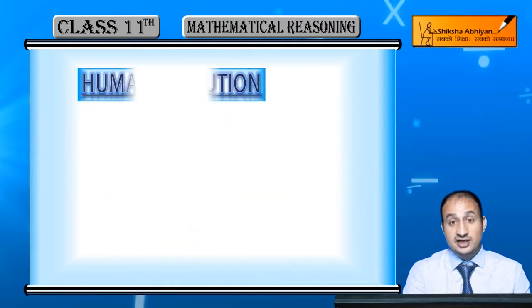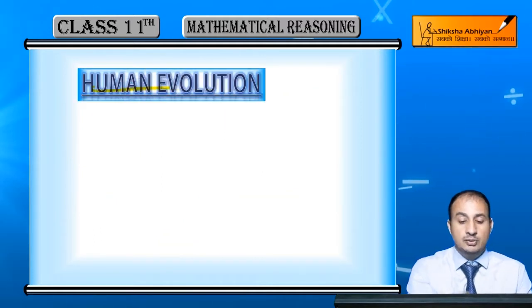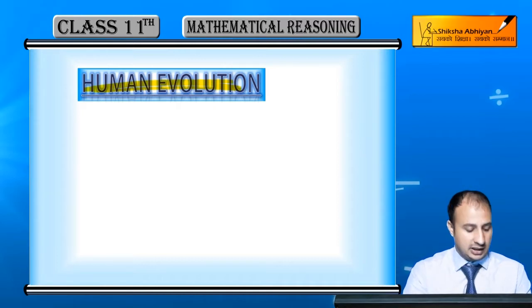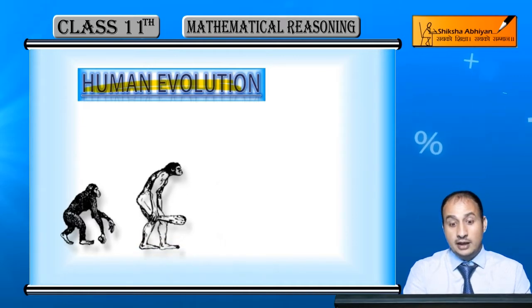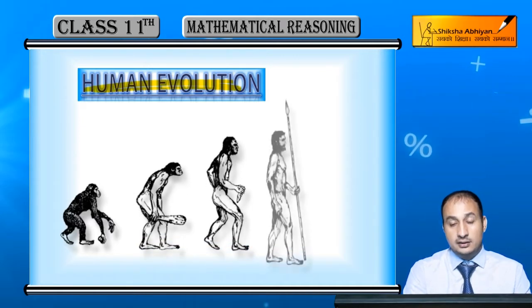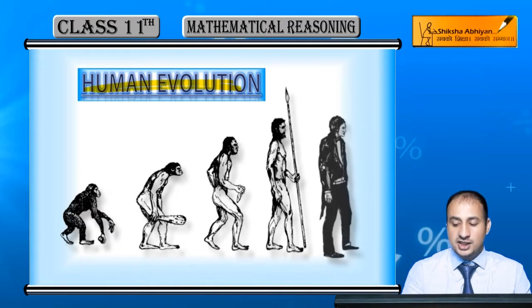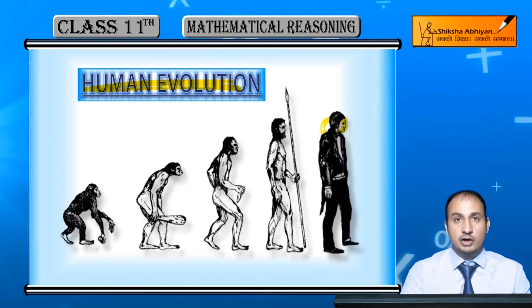Aur ye ability of reason bhi student hamein ko ek saath nahi mili. Human evolution mein agar hum yahan dekhein human evolution ke andar, pehle hum is tarah the, apes mein, then hum evolve huye, then evolve huye, then evolve huye, aur aaj ek modern man ke liye evolve ho gaye.